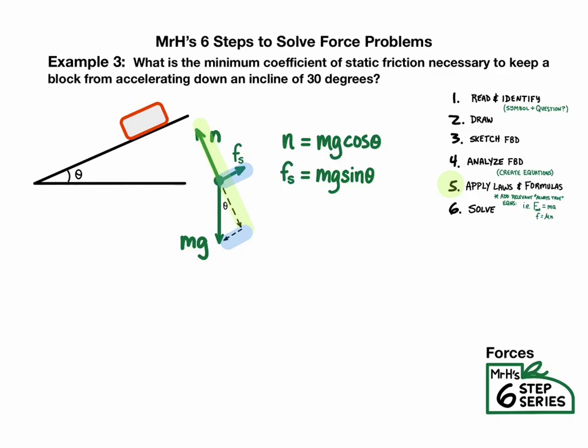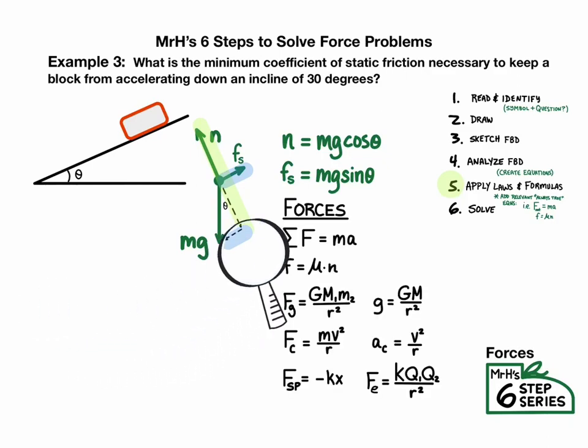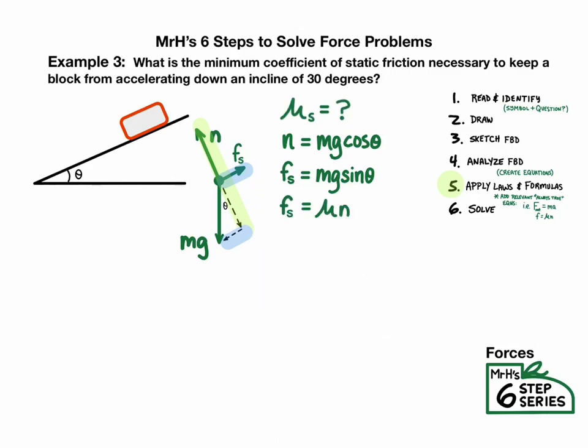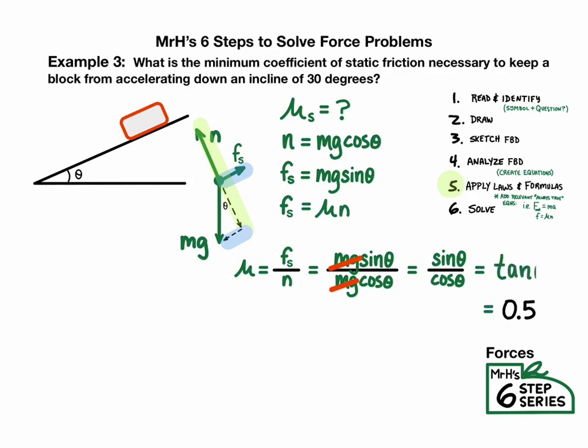And now we're ready to apply laws that are always true. So we're going to look for things that are related. So we've got friction and normal. Oh, there we are. We've got an equation that has friction and normal. F equals mu n. And remember we are solving for mu. So we're going to set mu equal to friction divided by normal, and substitute for those things. And it looks like mg's are going to cancel, which leaves us with sine divided by cosine, which is just tangent theta. So mu equals tangent of 30, which is 0.57.